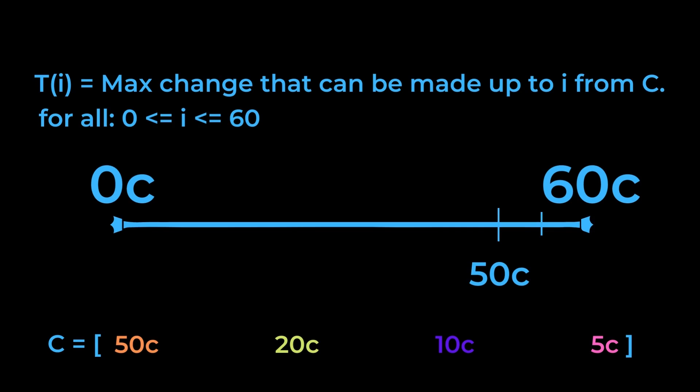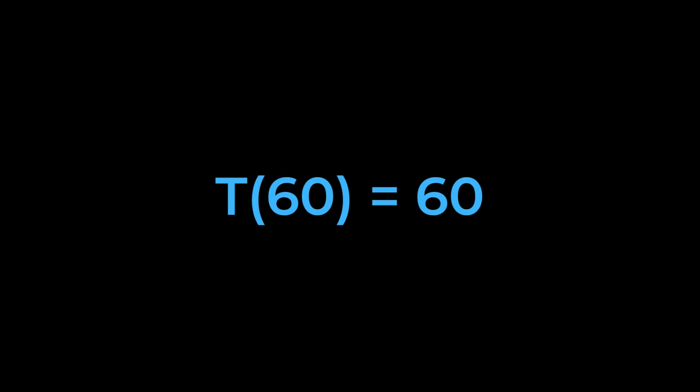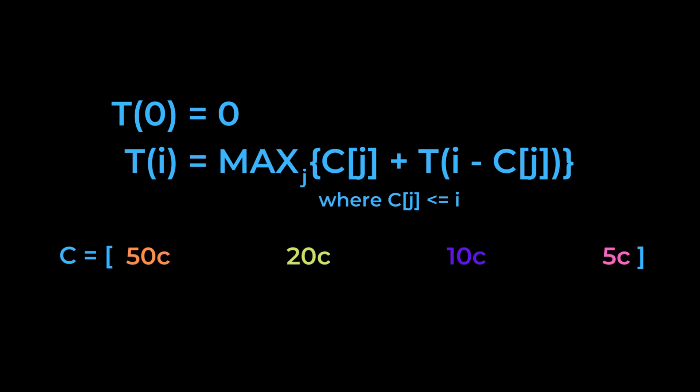The overall solution we are looking for can now be found by checking if t of 60 is equal to 60, that is, if we can make 60 cents from the denominations available. We solve these sub-problems through a recurrence relation. This is done in a way that is mathematically recursive. That is, we use previous entries of t to solve it.